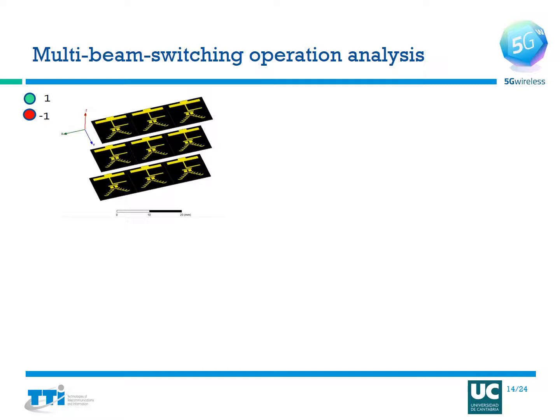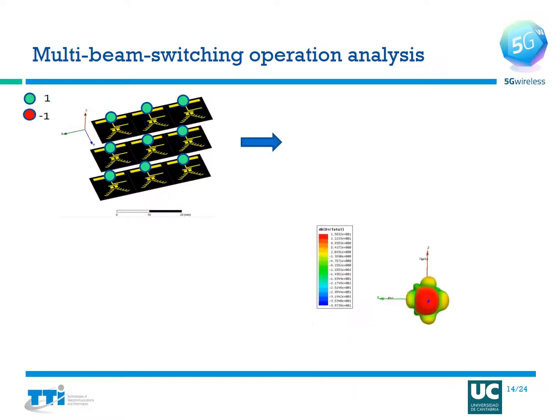Here you can see the multi-beam switching operation analysis. I will take you through the different antenna excitation states and how the antenna is excited to operate in different multi-beam switching operations. On the left you can see the 3x3 antenna array of the millimeter wave antenna element. Green signifies an excitation of +1 (amplitude 1, phase 0°) and red signifies an excitation of -1 (amplitude 1, phase 180°). When all antenna elements are fed with equal amplitude and phase of 0°, you get a classical boresight beam projecting out towards you.